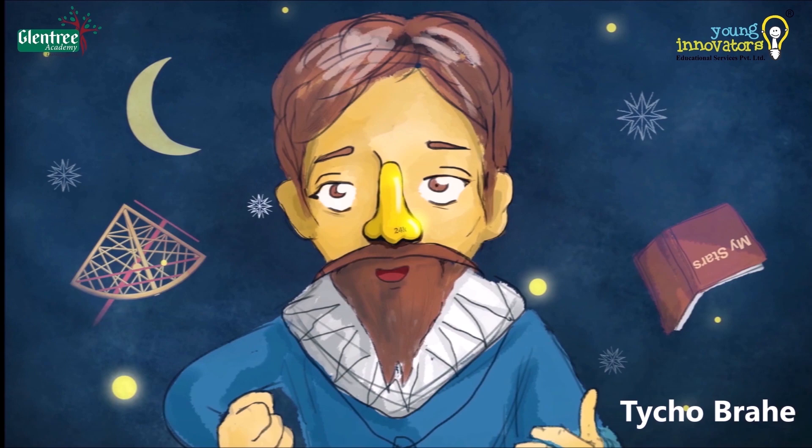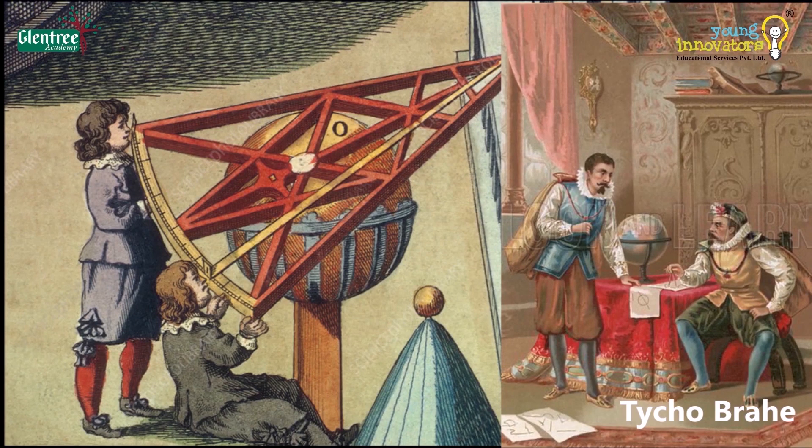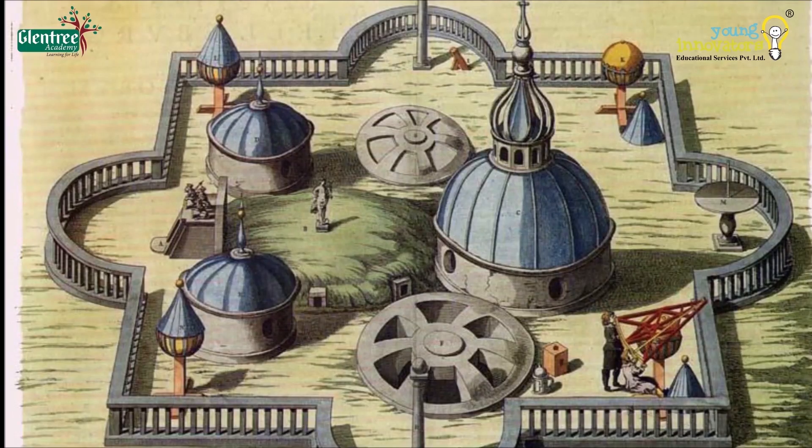Tycho Brahe, a famous astronomer, believed in the work of Copernicus and began to work on it. He continued the observation of many planets in the sky and recorded a lot of data without much instruments for many years.